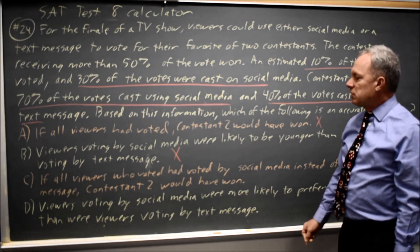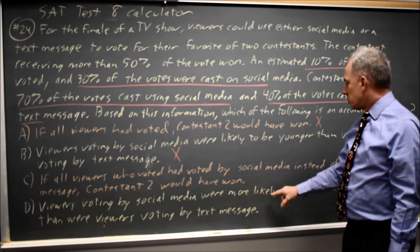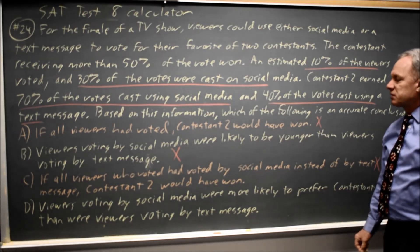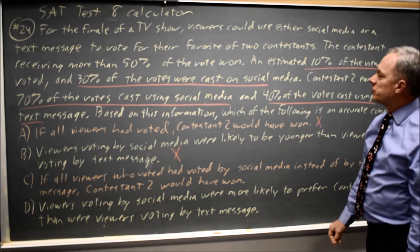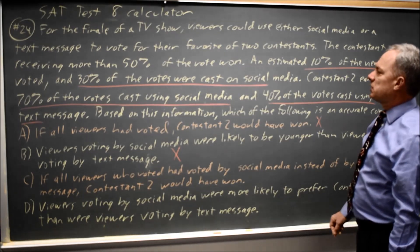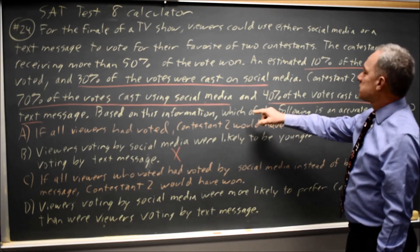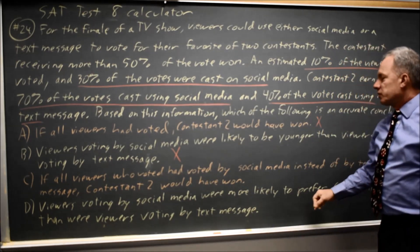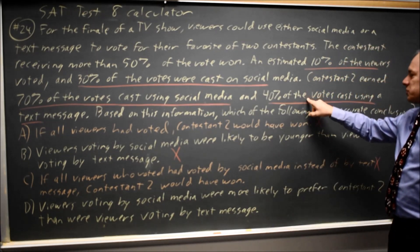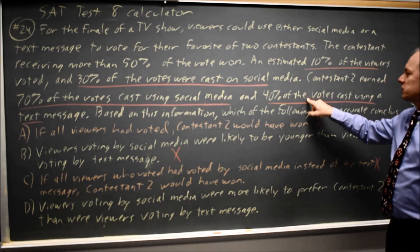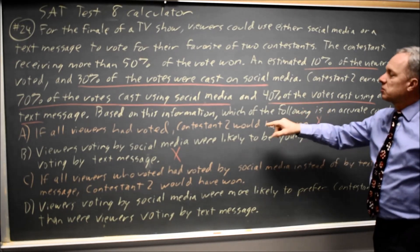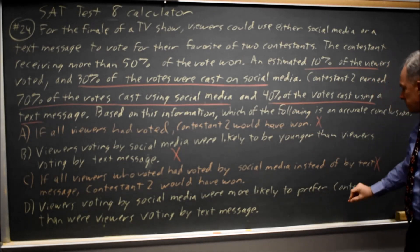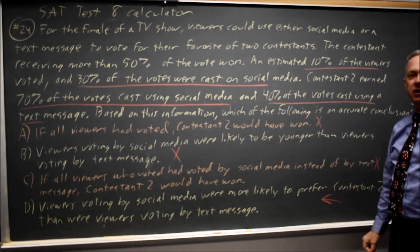Finally, choice D: viewers voting by social media were more likely to prefer contestant two than were viewers voting by text message. Viewers voting by social media: 70% preferred contestant two. Viewers voting by text message: 40% preferred contestant two. So those using social media were more likely to prefer contestant two than those using text message, so choice D is the correct answer.